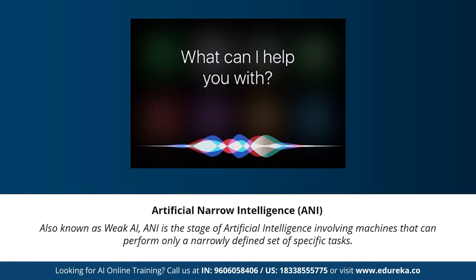Artificial narrow intelligence, also known as weak AI, is a stage of artificial intelligence that involves machines that can perform only a narrowly defined set of specific tasks. At this stage, the machines don't possess any thinking ability — they just perform a set of predefined functions. Examples of weak AI include Siri, Alexa, AlphaGo, Sophia, and self-driving cars. Almost all AI-based systems built to date fall under the category of weak AI or artificial narrow intelligence.